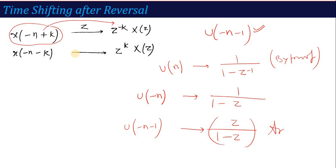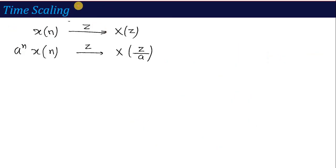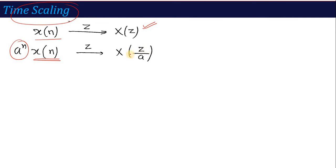So we've done reversal, we've done shifting. Similarly there is a property called Time Scaling. The next property is Time Scaling. It says: if X(n) has Z-transform X(z), then what is the Z-transform of a^n * x(n)? Replace z with z/a wherever z appears in X(z). This is called the time scaling property.